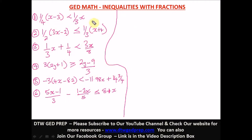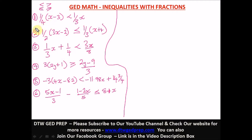The first question says: one over four, in parentheses, x minus three, less than x over three. Remember the inequality signs — less than, greater than, less than or equal to, greater than or equal to — just like your two elbows, where your left is less than and your right is greater than.